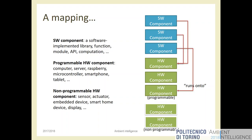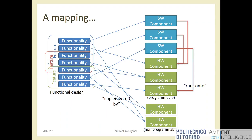Architecture is a mapping between the set of functions needed to implement features and the components we have available. I need this component because it is required by these two functionalities, which in turn are needed for a given feature. This clear link between declared features and actual hardware choices was missing in many of the deliverables I reviewed last week — there was no clear connection between the features we declared and the actual hardware choices made.